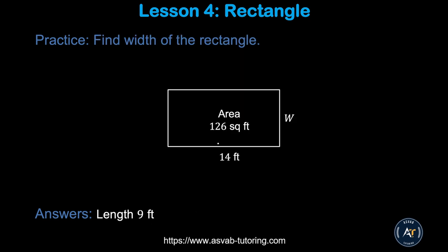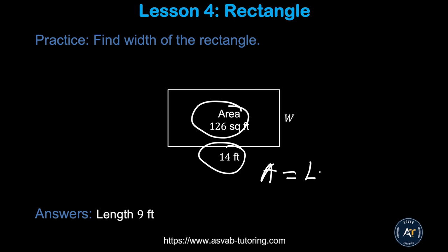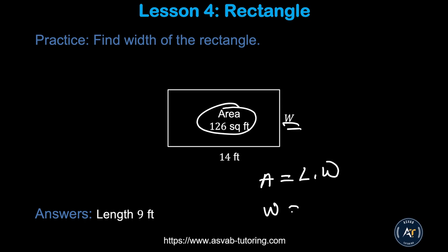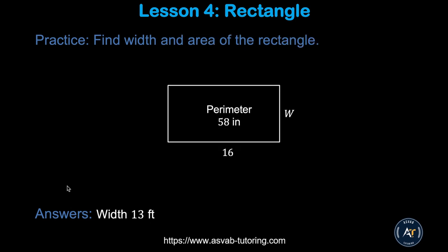In this problem the area is given as 126 and the length is 14. You need to find the width. You know area equals length times width, so width equals area divided by length. Use that formula and make sure you get 9. There is another example and practice problem — pause the video and try by yourself.